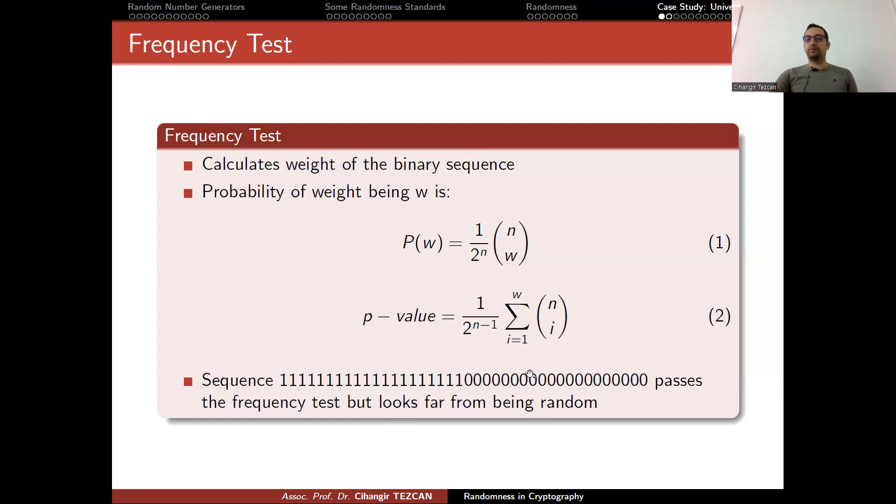But the problem is, just look at this sequence. This sequence passes this test in the best way possible. It gets the highest mark, saying the frequency is fantastic, because half of them are 1s and half of them are 0s. So it passes this test, having the highest score, but just by looking at it, you know that it is not random.